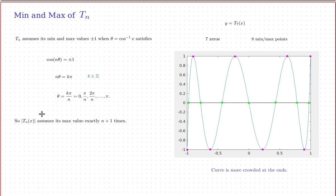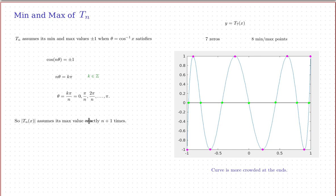So tn takes its max and min values exactly n+1 times. There are actually n+1 different values where cosine(n*theta) takes its maximum values. Here's a graph of t7. It has exactly seven zeros, exactly eight min and max points — one, two, three, four, five, six, seven, eight — and exactly six changes of direction, six bumps.